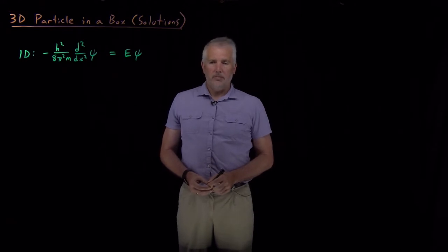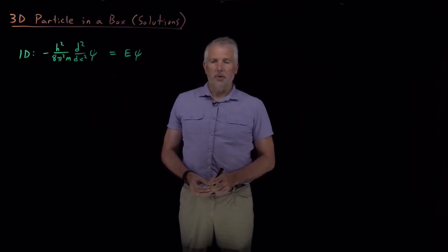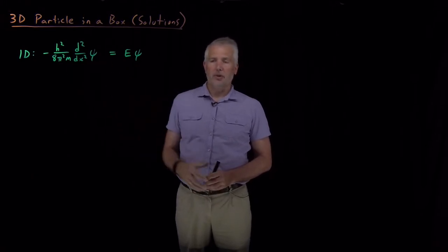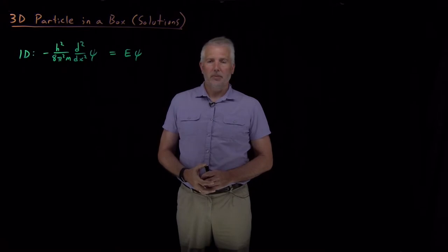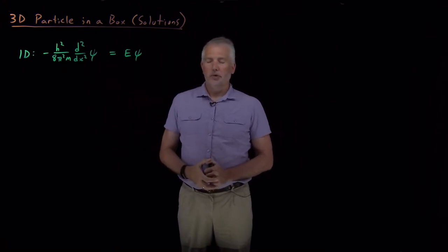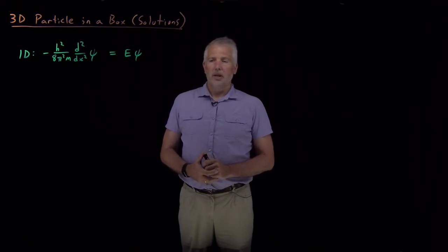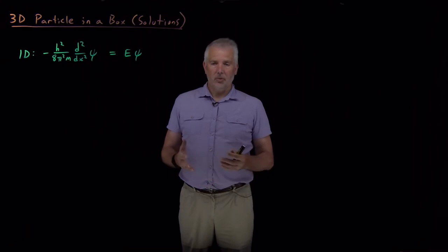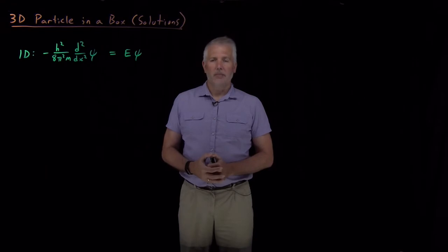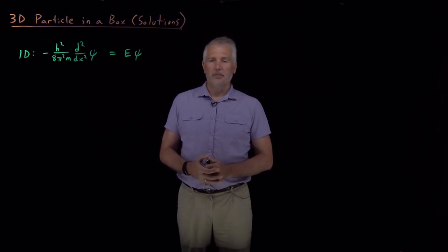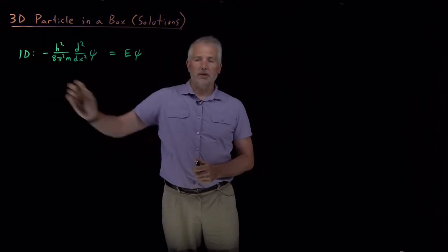We've seen that the one-dimensional particle in a box is a problem we can solve Schrödinger's equation for. We got some mileage out of solving that problem — it's a useful model for describing things like an electron in a linear conjugated hydrocarbon molecule. But in general, problems in the three-dimensional world are not well described by a one-dimensional particle in a box, so we'll get a lot more mileage out of solving the same problem in three dimensions.